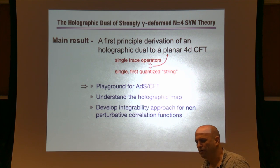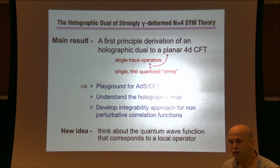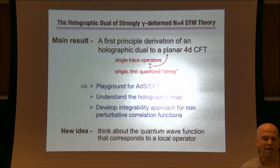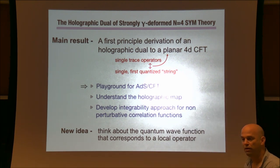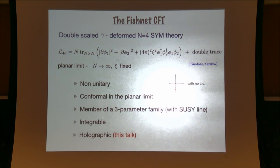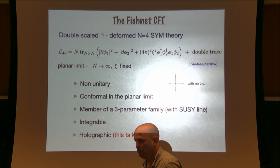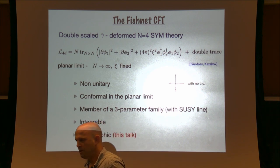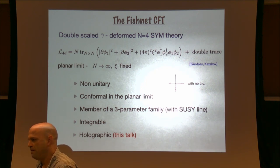If I try to zoom out and think what is the new idea applied here, it is that we are trying to think about the wave function in a four-dimensional conformal field theory that is dual to a local operator. This will be a bit of the main star of the duality. Knowing this wave function — knowing which operator is there — allows us to compute any correlation function of it. So it's a kind of very specific basis for describing such operators.